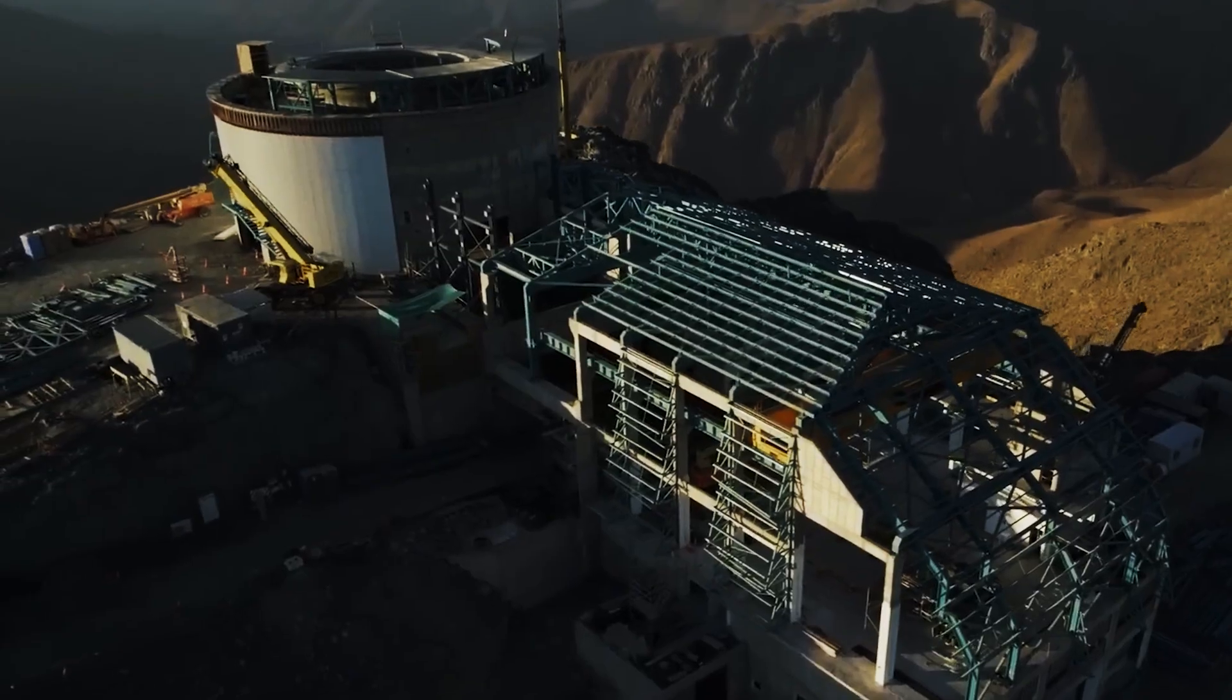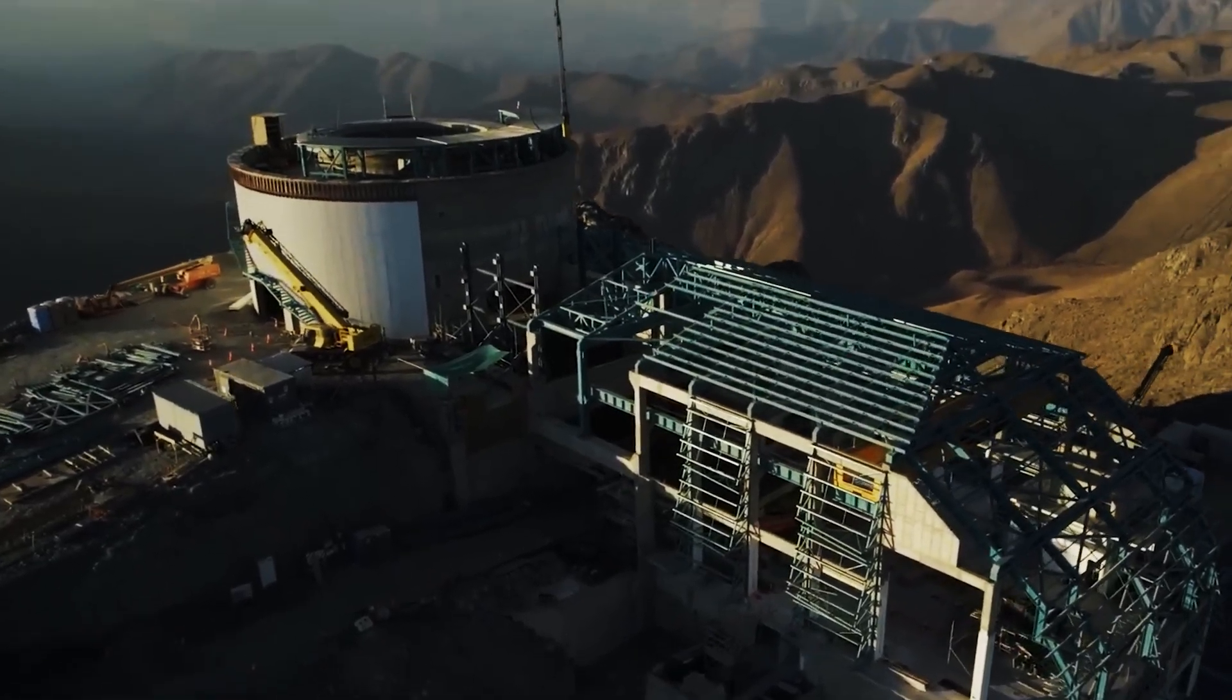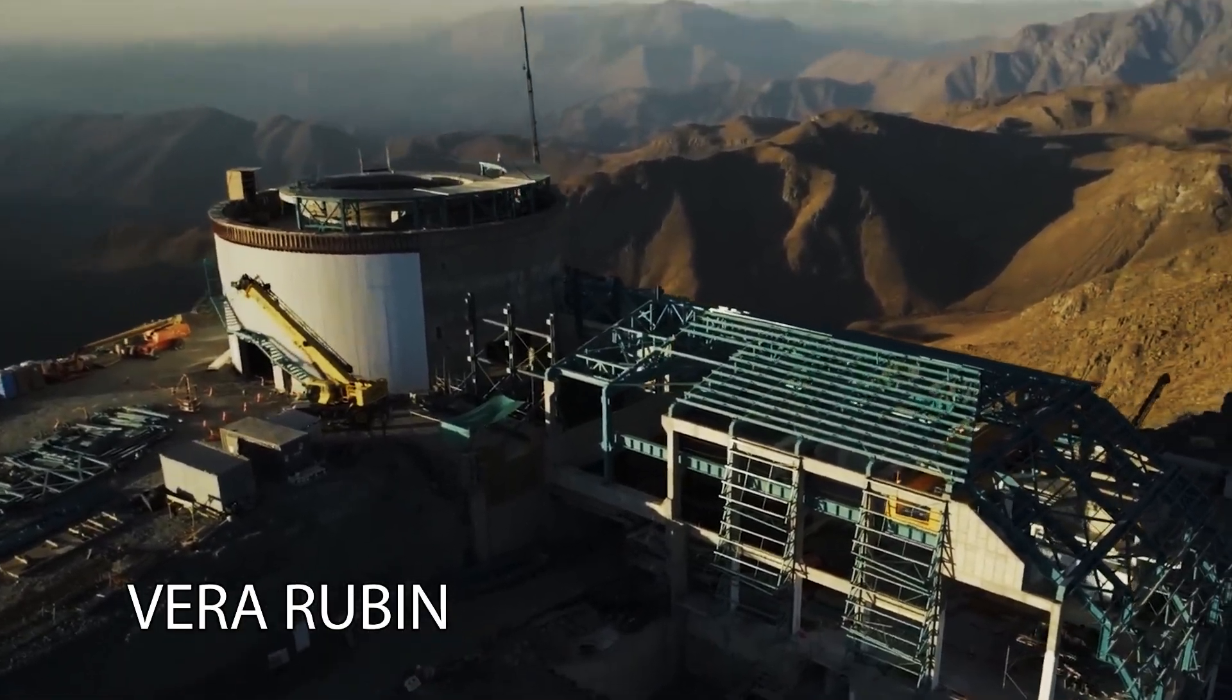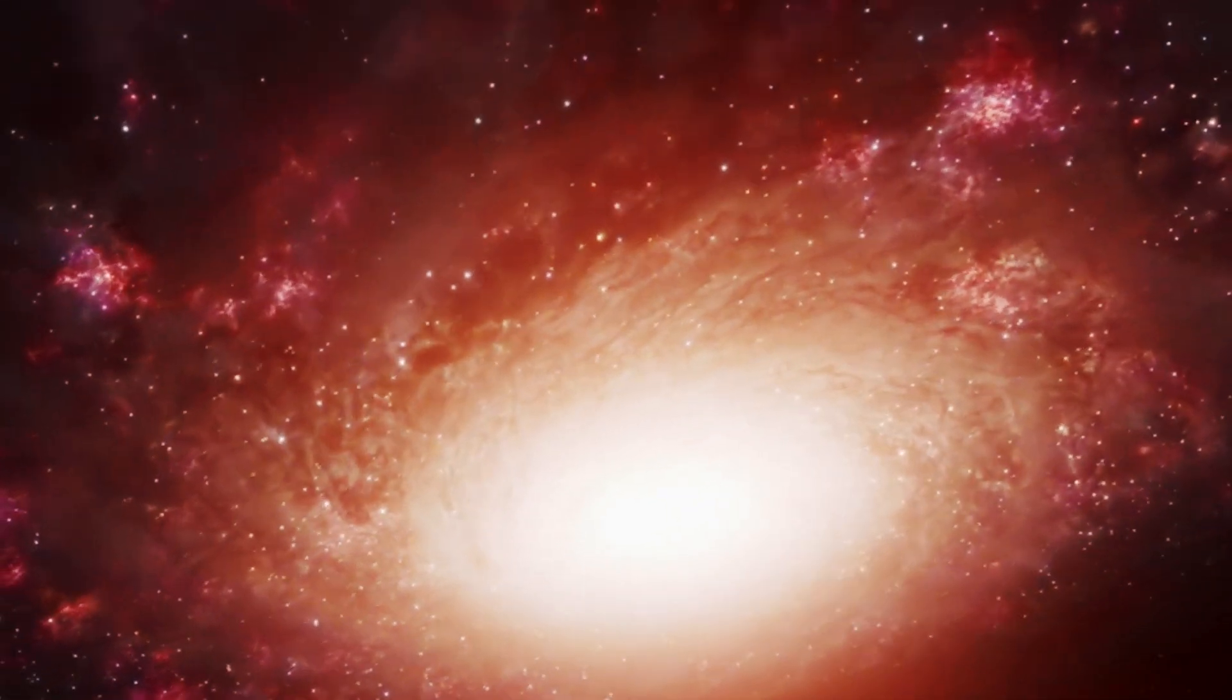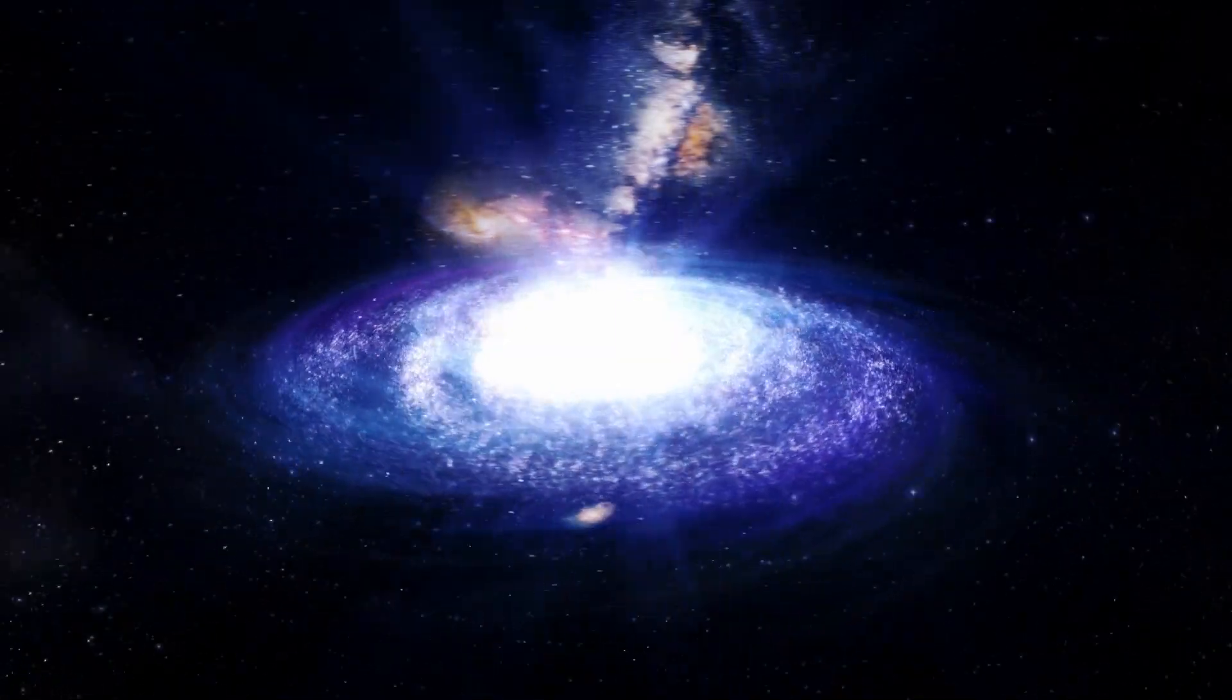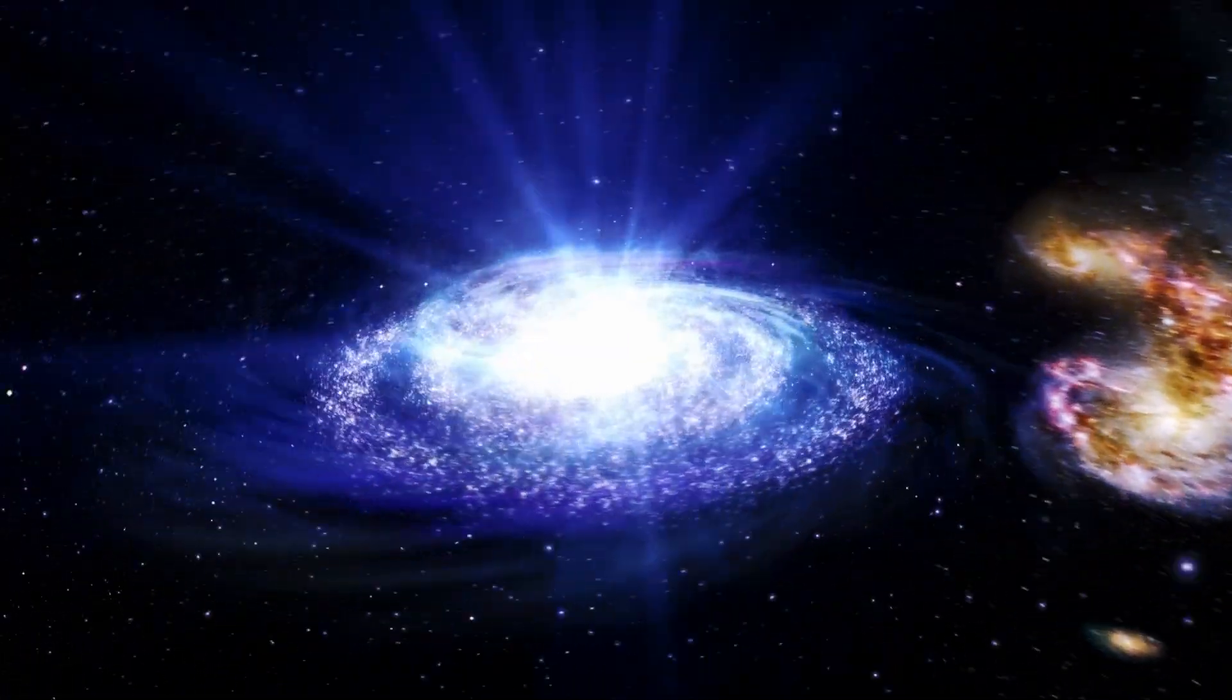It is no accident that this observatory is named after Vera Rubin. She was a titan of astronomy, a brilliant and tenacious scientist who, in the 1970s, studied how galaxies rotate, expecting outer edges to move slower than those at the center. But that's not what she found.